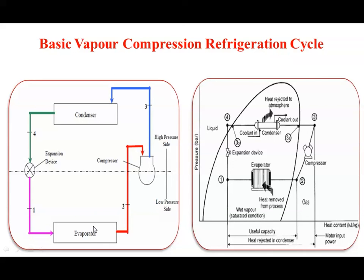This VCR system is generally called a latent heat pump — we extract the latent heat of evaporation in the evaporator and reject it to the atmosphere as latent heat of condensation in the condenser. On the P-H chart, the cycle is shown as: point 1 to 2 — evaporation process; point 2 to 3 — compression process; point 3 to 4 — condensation process; point 4 to 1 — expansion process.